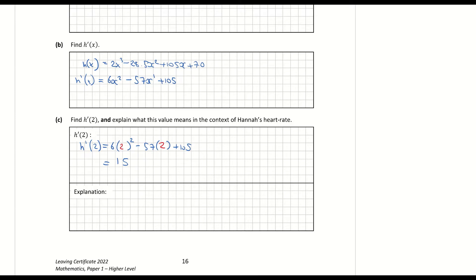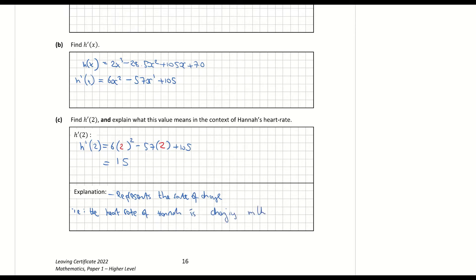The next part asks for an explanation. Don't forget that when you find the derivative of something, you're finding its rate of change. So h dash of 2 represents the rate of change — in the context of this question, that's the rate at which her heart rate is changing with respect to time, and time here is in minutes.